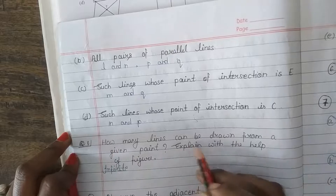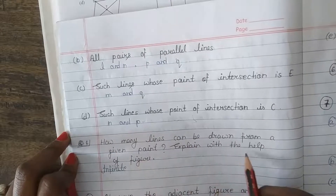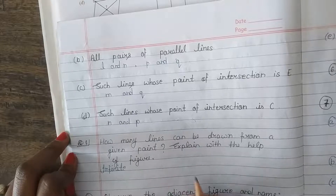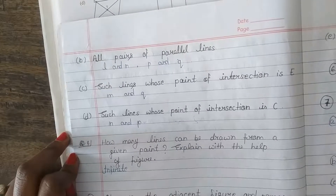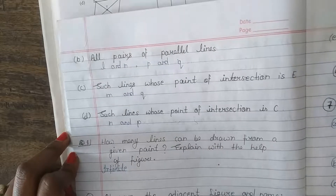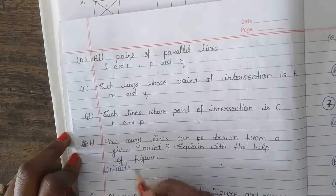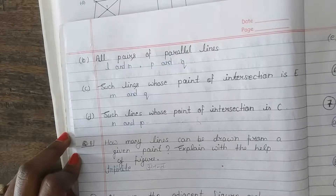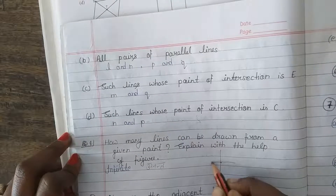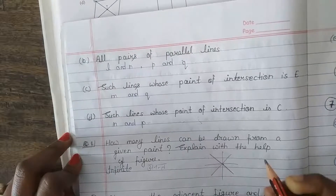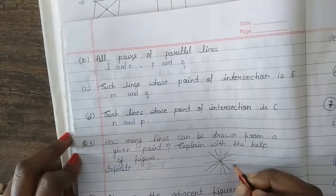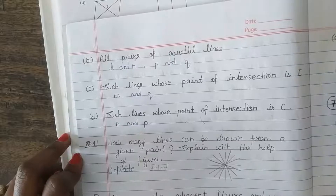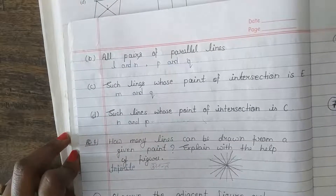Question 4: How many lines can be drawn from a given point? Explain with the help of a figure. From any one given point, the answer is infinite — meaning countless lines can be drawn. For example, from a single point, we can draw infinite lines in all directions.